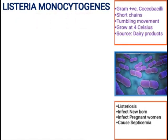Listeria monocytogenes is a coccobacillus that enters the blood. It can travel to the brain and cause inflammation of the brain. When there is inflammation of the brain, that condition is known as meningitis. So in Listeria monocytogenes infection, there is a condition of meningitis.